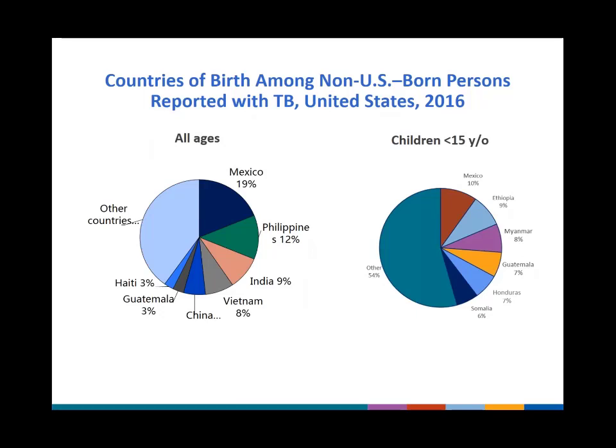This slide is important to remember. These are the countries from which cases come. It's no surprise that Mexico would be the first one, just because they're our neighbors. But the other countries are the Philippines, India, Vietnam, China, Guatemala, and Haiti. The top countries of origin for non-U.S.-born pediatric cases are slightly different — Mexico is still number one, but there has been more diversity in the origin of these cases in 2016 compared to previous years.